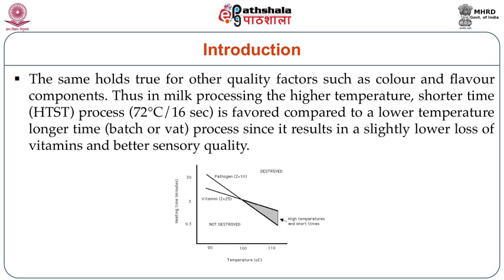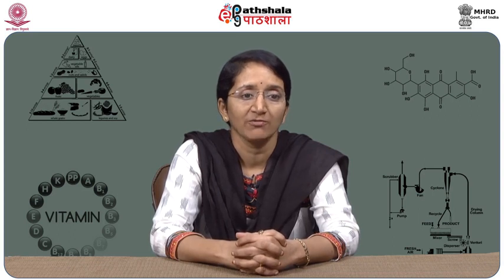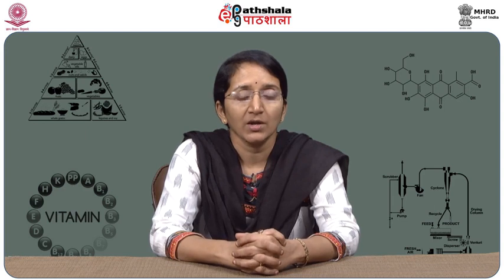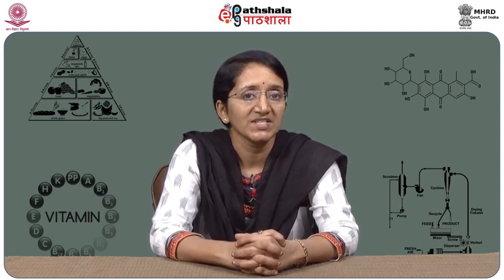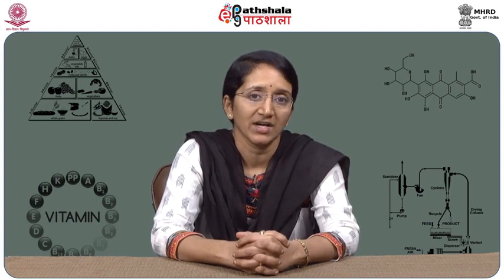Taking the example of milk processing, the higher temperature shorter time process — that is the HTST process where 72°C is applied for 16 seconds — is very favorable compared to lower temperature long time processing used in batch processing, since it results in a product with slightly lower loss of vitamins and better sensory product characteristics.